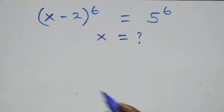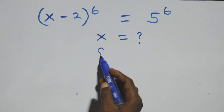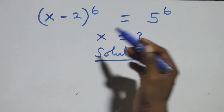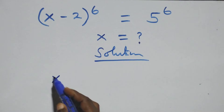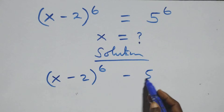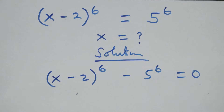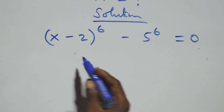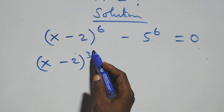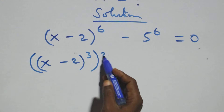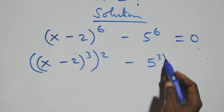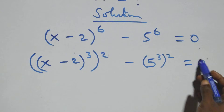Hello, you are welcome. We will solve this exponential equation. From what we have here, we take 5 raised to power 6 to the left-hand side, giving us x minus 2, all raised to power 6, minus 5 raised to power 6, equals 0. We can rewrite x minus 2 raised to power 6 as x minus 2 raised to power 3, then raised to power 2, since 2 times 3 equals 6.